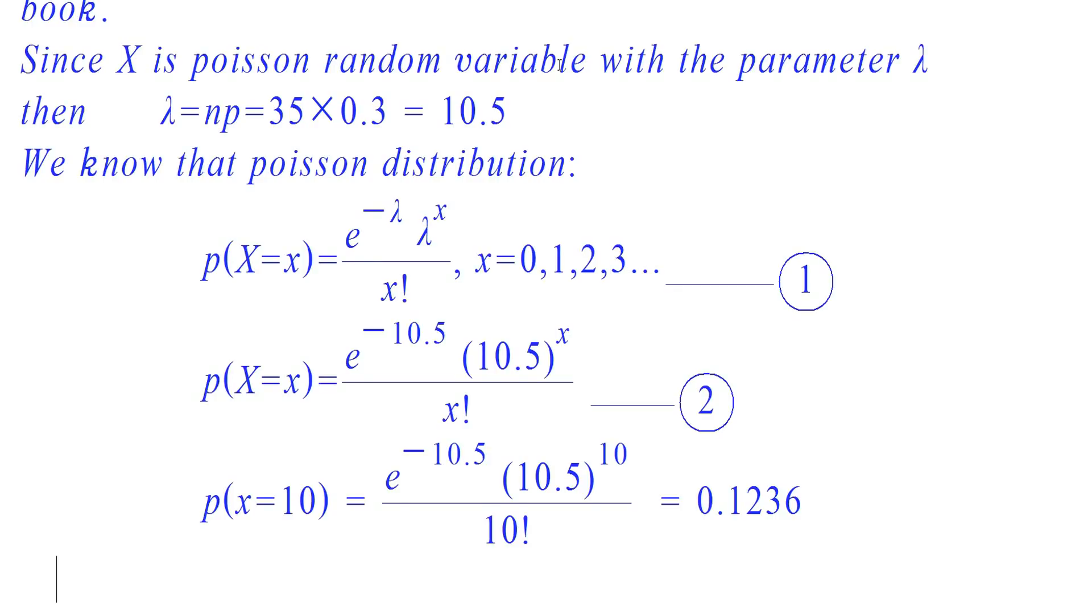0.1236 is the probability that chapter 1 has 10 misprints. But here the question is, the probability of chapters 1 and 5 have 10 misprints each. As I said earlier, probability of 10 misprints in chapters 1 and 5 will be equal. Therefore, the required probability is equal to 0.1236 into 0.1236, which is equal to 0.01527.